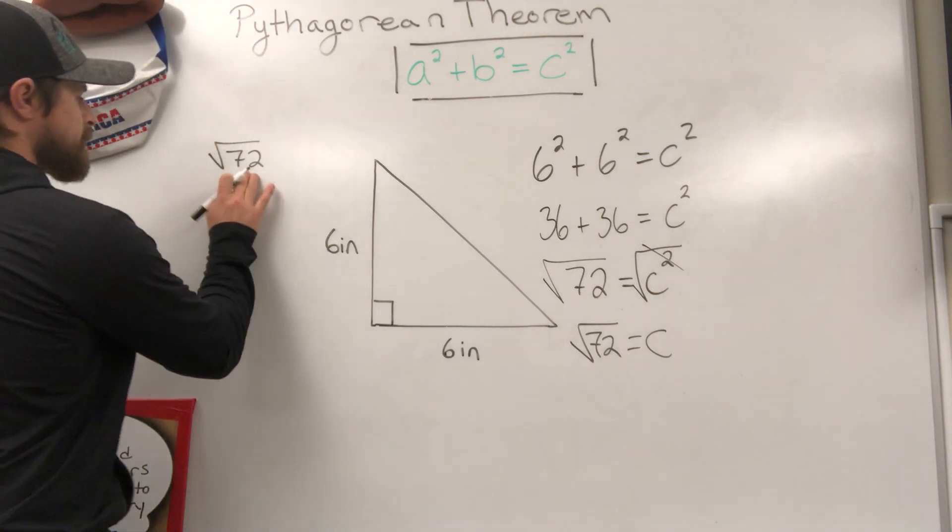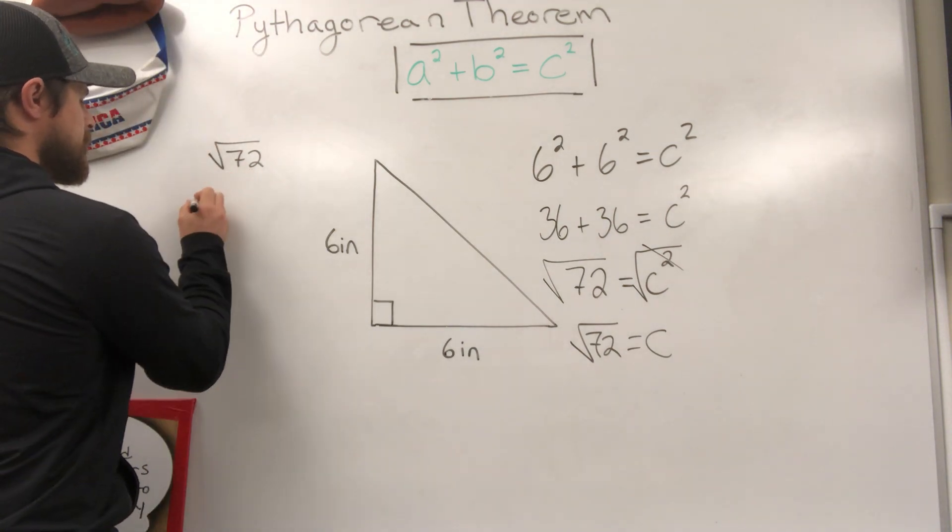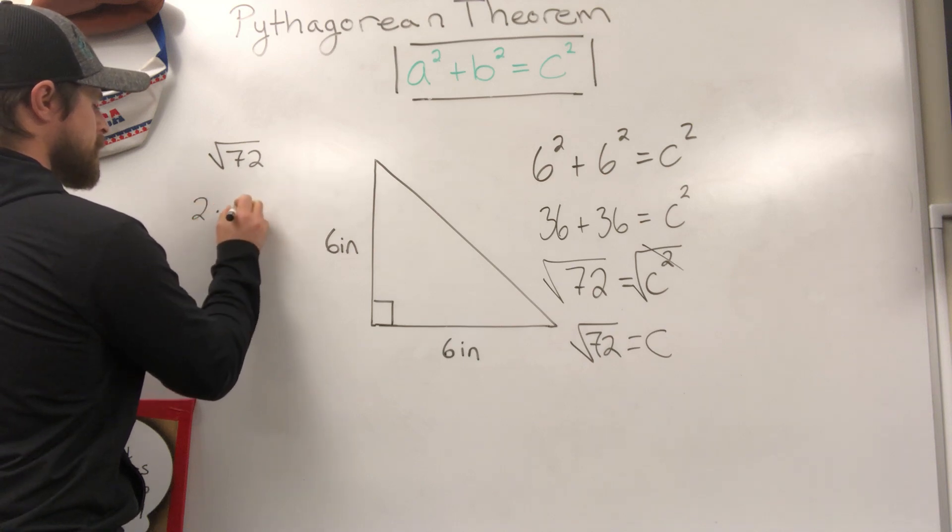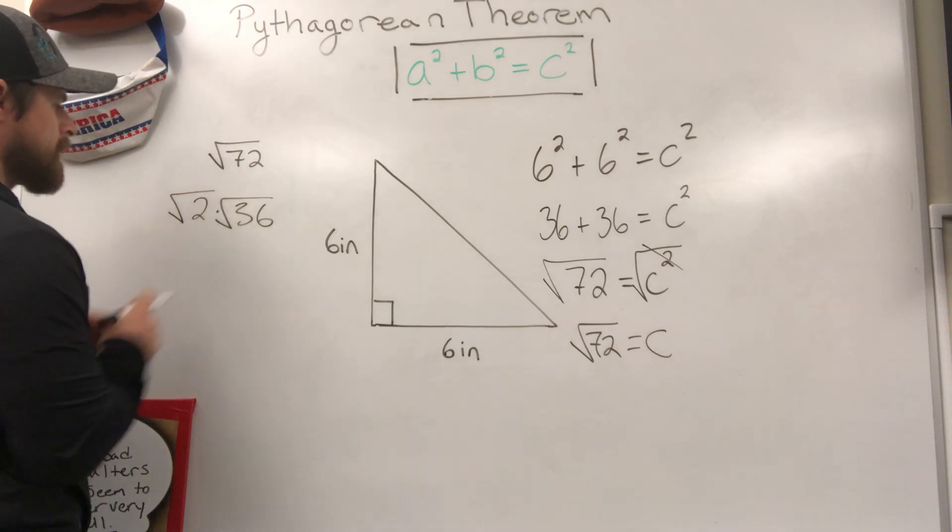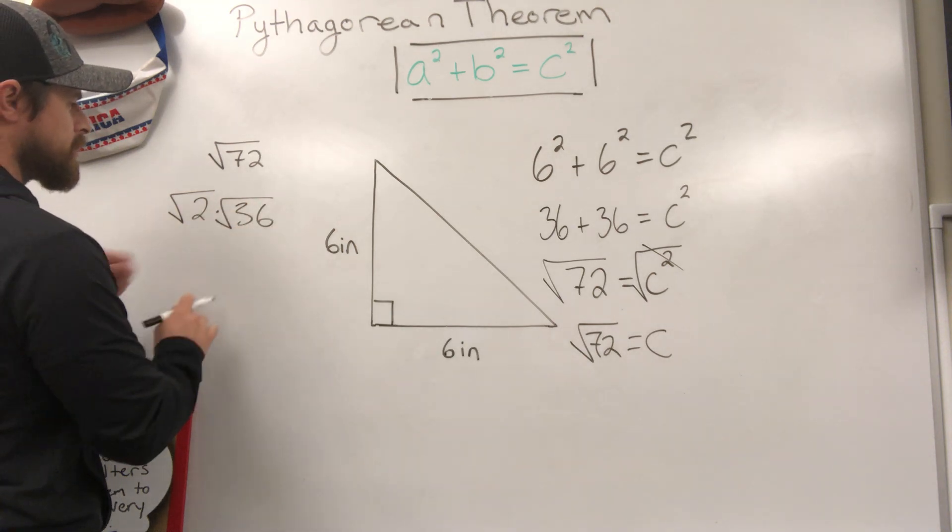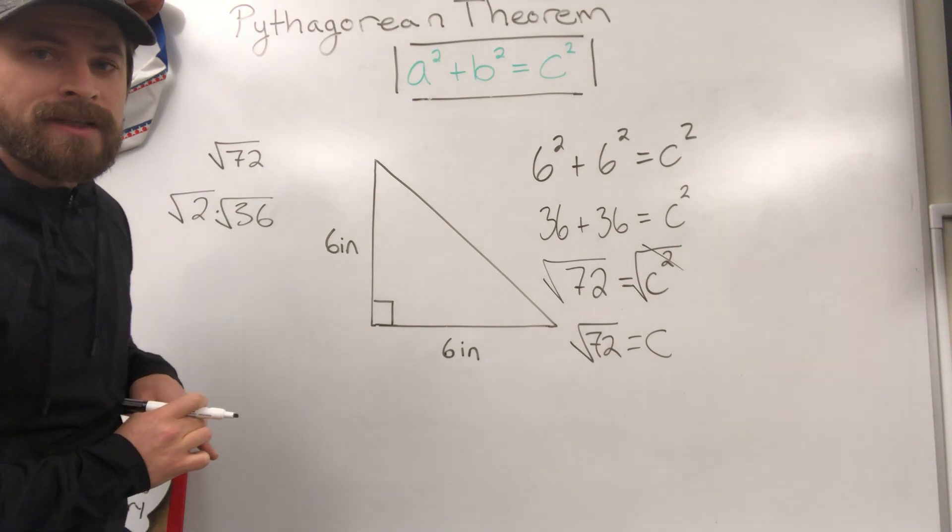And the first thing that comes to mind when I think of 72 is 2 times 36. Now if I put the square root around both of these, square root of 2 times the square root of 36 would equal the value of the square root of 72.